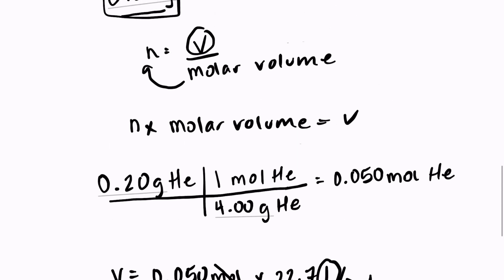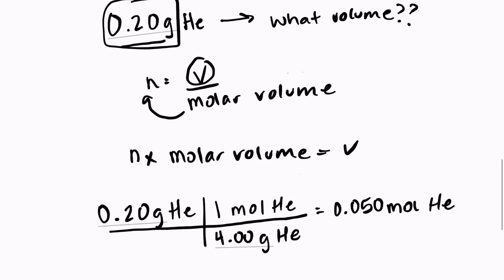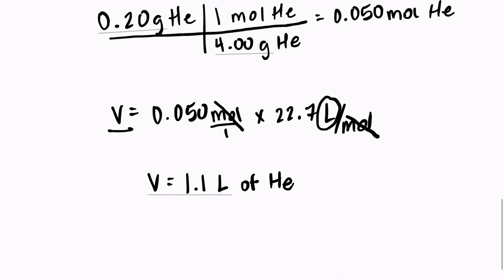So 0.2 grams that I started with of helium only occupies a volume of 1.1 liters. And remember that is also the same as 1.1 decimeters cubed, if that is your preferred unit.